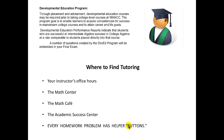Our classes are part of developmental education, which means we're trying to get you ready for college algebra or other college-level courses like AAS Math. Through placement and advisement, developmental educational courses may be required prior to taking college-level courses. The program goal of developmental math is to enable learners to acquire competencies for success in mainstream college classes and to attain career and life goals. For tutoring and help, there are my office hours, the Math Center, the Math Cafe, and the Academic Success Center — all located on the main Bentonville campus — and every homework problem has helper buttons, which you would have seen in orientation part two.